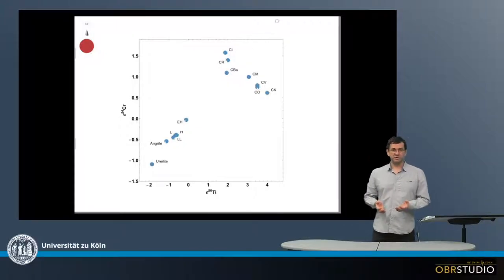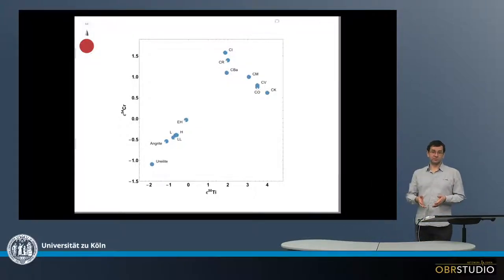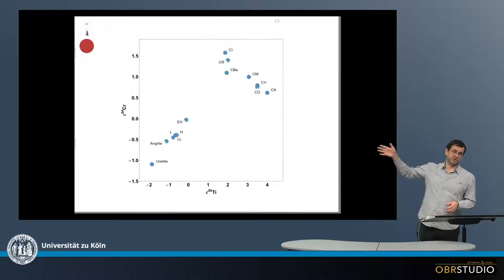When we look at nucleosynthetic anomalies in meteorites, we can distinguish two groups. And this is what is shown in this plot here.